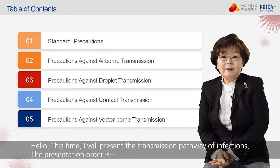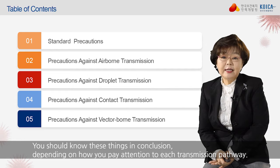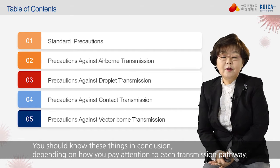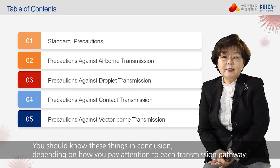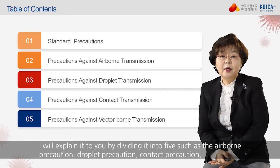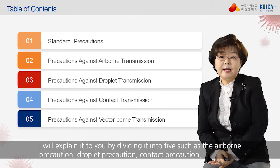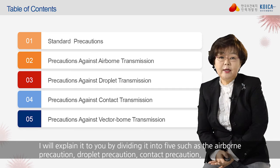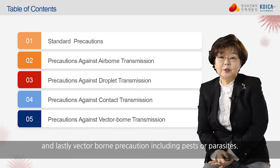Hello. This time I will present the transmission pathway of infections. The presentation order covers things you should know, depending on how you pay attention to each transmission pathway. Standard precaution is expressed as S. I will explain it by dividing it into five categories: airborne precaution, droplet precaution, contact precaution, and lastly vector-borne precaution, including pests and parasites.